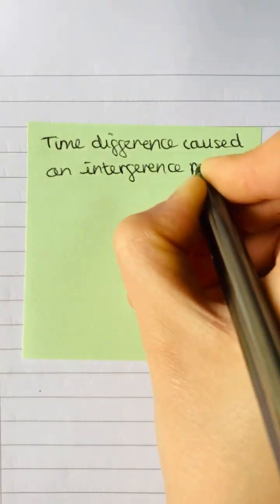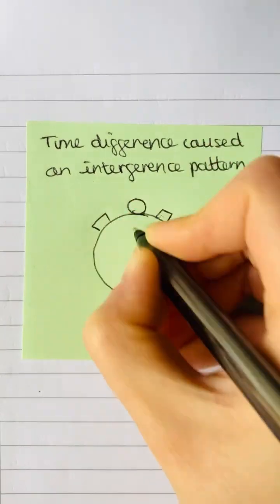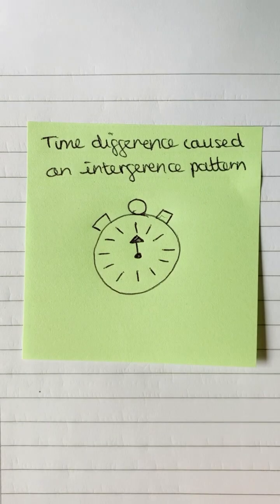The difference in times taken for each light beam to reach the observer meant they arrived out of phase, producing an interference pattern.